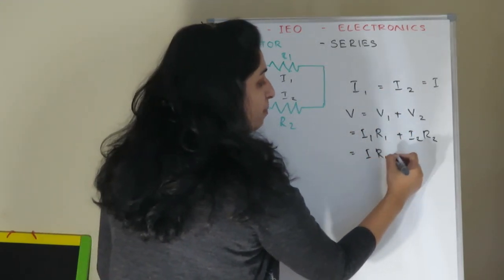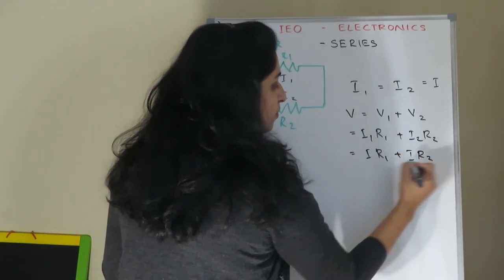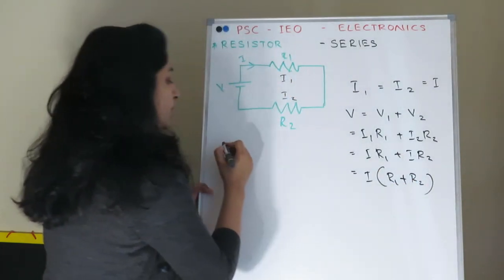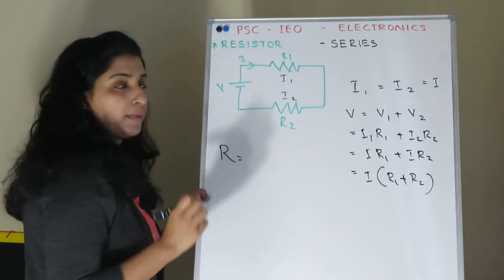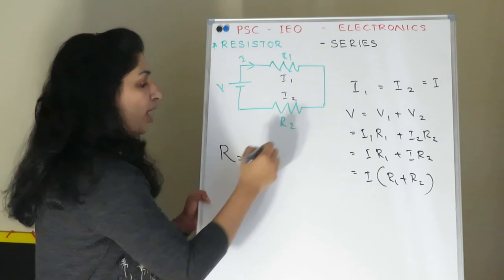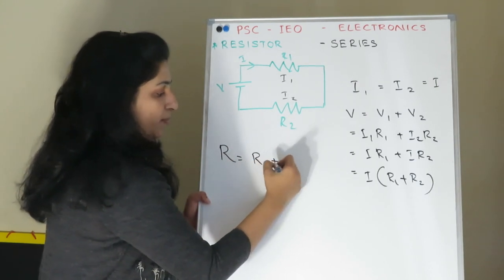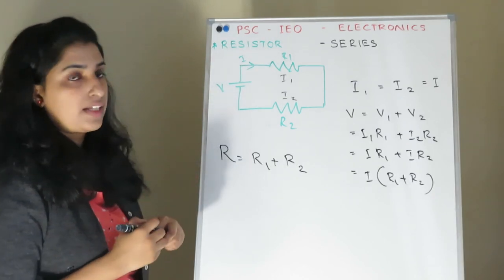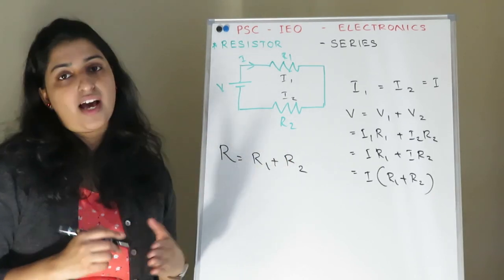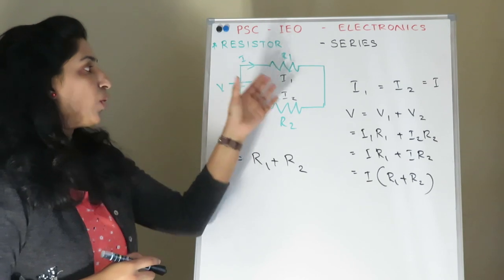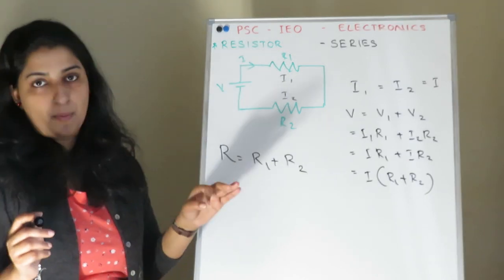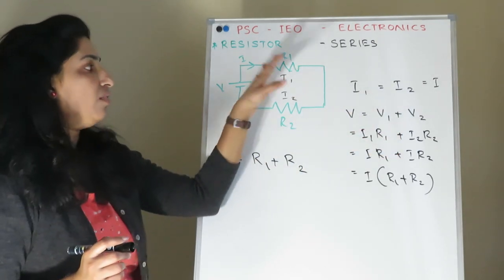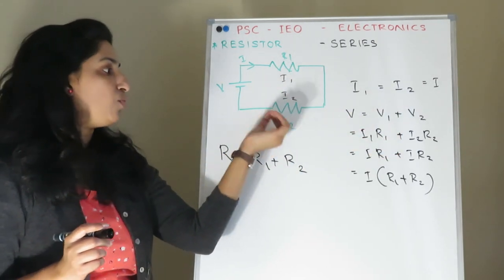V equals IR1 plus IR2, so I times R1 plus I times R2 equals I times (R1 plus R2). The total effective resistance in series is R1 plus R2. The current is the same throughout, and the voltages V1 and V2 are added together.